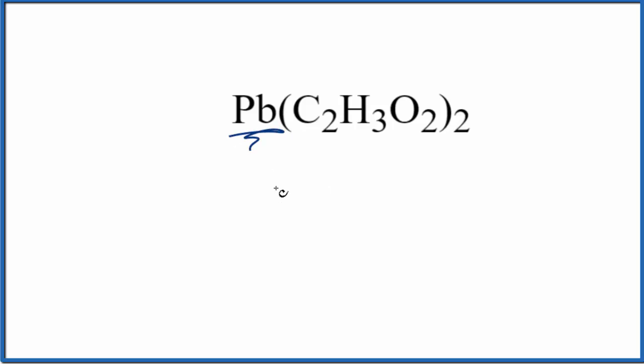Lead is a metal. In fact, it's a transition metal. And C2H3O2, the acetate ion, is a group of nonmetals. It's a polyatomic ion. So we have a metal and nonmetals there. This is an ionic compound.